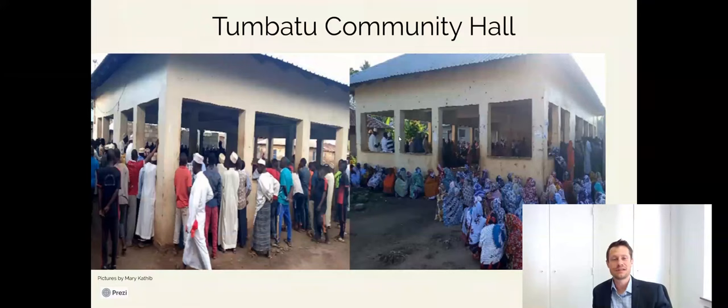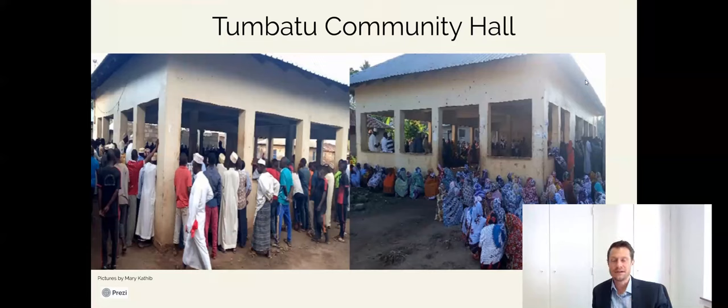A second example for the democratization process is the Tumbatu Community Hall on Zanzibar. Here the idea is that the participants who come to that place, here we have men in this picture, here we have women, is that they decide together on very low level community affairs. One example is the joint decision-making on how and where to bury their loved ones when somebody passes away, or second, to take the decisions on where to go for cultivation in their land because this is done in order to allow the land to rejuvenate, which is part of sustainable agricultural practices.